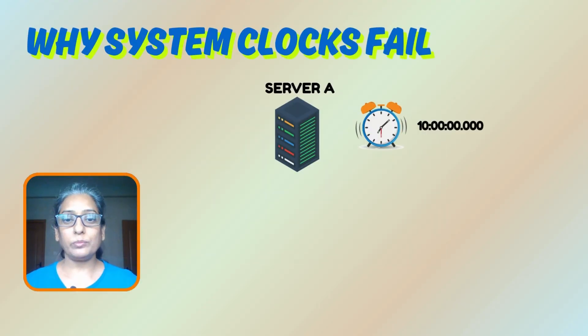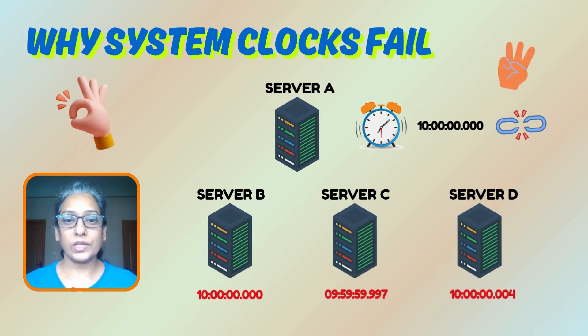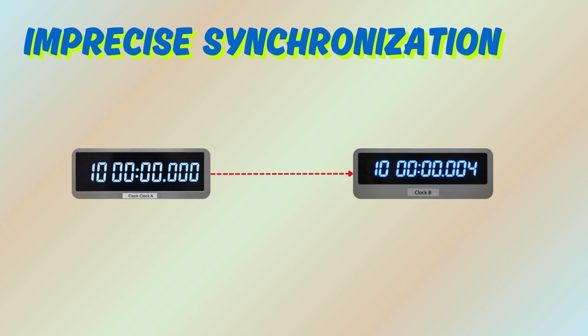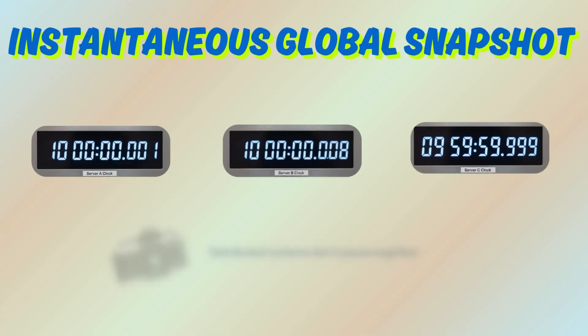In a distributed system, you can't trust system time on one machine. System time breaks across many machines for three reasons: clocks drift because hardware oscillators are not perfect; network delays and asymmetric routes make synchronization imprecise; and there is no mechanism to take an instantaneous global snapshot.